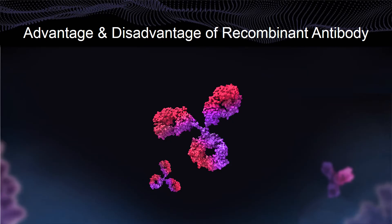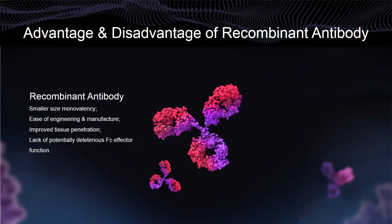Compared with conventional antibodies, recombinant antibodies possess some advantages, such as smaller size, monovalency, ease of engineering and manufacture, improved tissue penetration, no animal immunization required, broader biodistribution, and lack of potentially deleterious effector function.